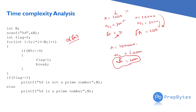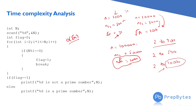We are done with determining whether a number is prime or not. Next, we'll look at how to print all prime numbers from 2 up to a certain limit — say 100, 500, or 1 lakh. We'll see those algorithms in the next videos.